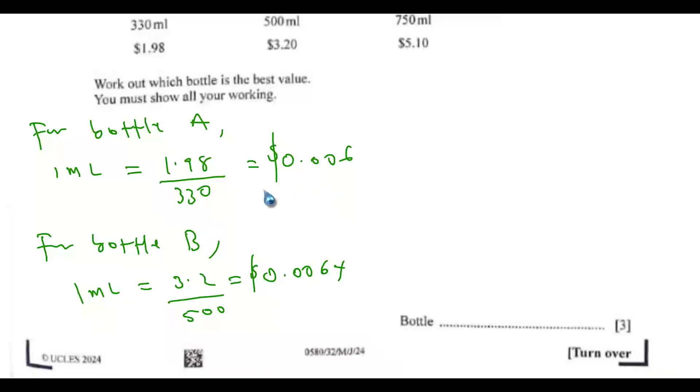So let's confirm, let's do the same thing for bottle C. So for bottle C, so 1 ml will be equals to $5.1 divide by 750. And this will give us $0.0068. So if you compare the answers, so this is the best value. So this will be bottle A.